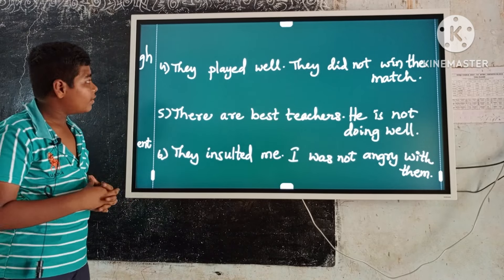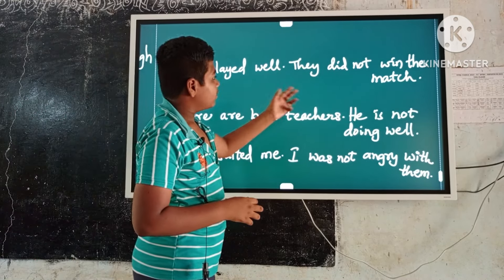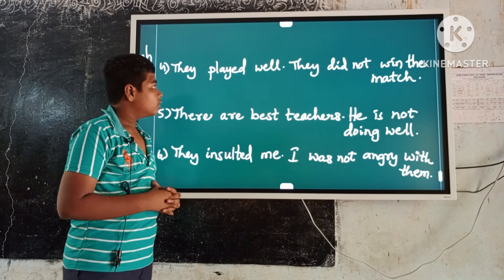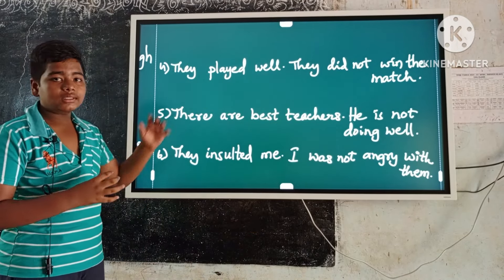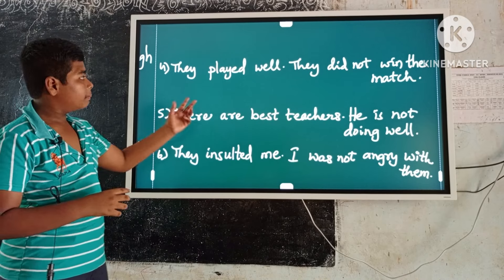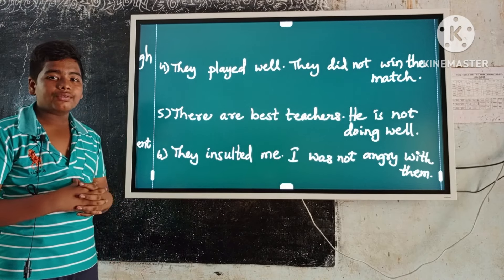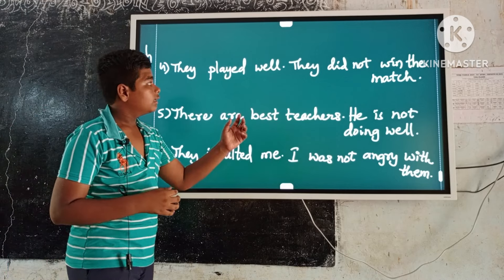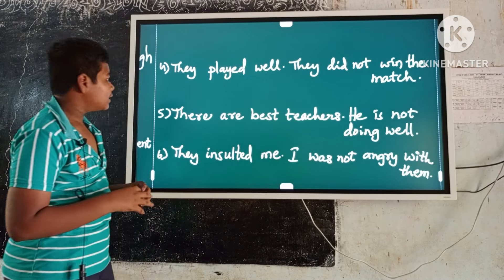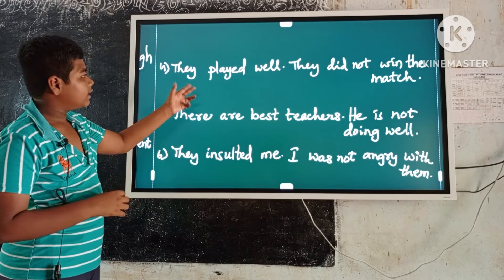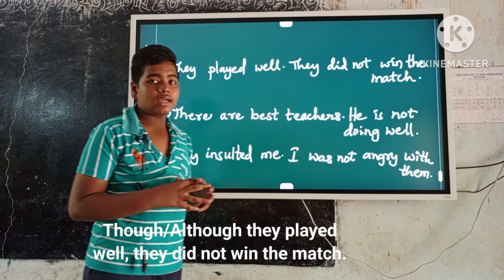Example number four: He played well. He did not win the match. These are contrast ideas. Here the first occurring sentence is 'he played well.' Keep though or although before the first occurring sentence, and a comma before the second sentence. So the answer is: Though or although he played well, he did not win the match.